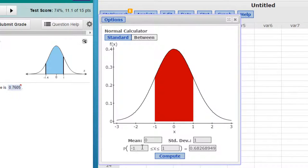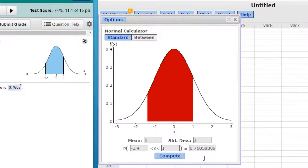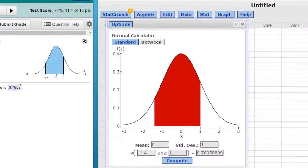We want minus 1.4. So I put that there, I'm going to leave the 1 in there and click Compute, and we get an answer of 0.76. That's how fast you can solve it.